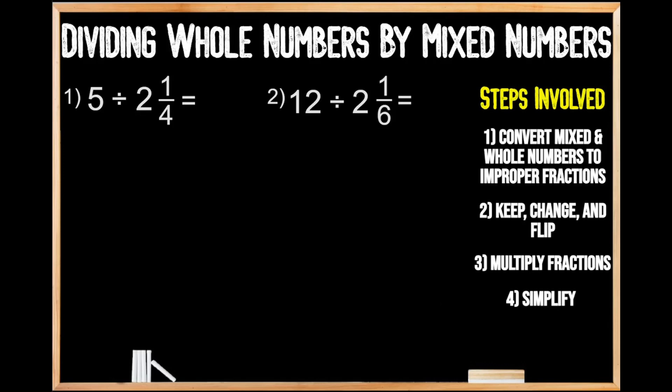In question number one, we're being asked to divide the whole number five by the mixed number two and one-fourth. Looking over to the right-hand side here under our steps involved, we can see that our first step is to convert our mixed and whole numbers to improper fractions.